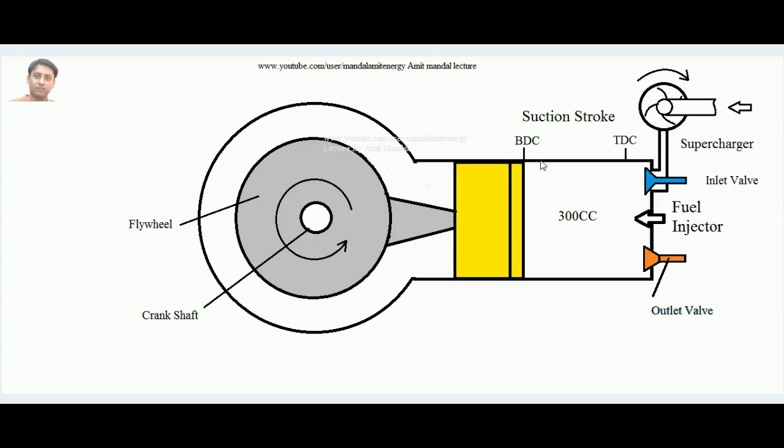More work done will be developed over the piston and in turn over the crankshaft. This supercharger is nothing but a sort of centrifugal compressor. It sucks the air from the atmosphere and whenever this inlet valve opens and piston pulls the air inside, it forcefully pushes some more amount of air to go inside.